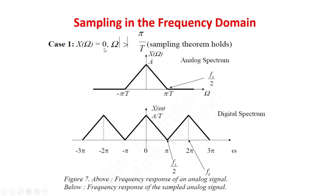This slide shows the sampling in the frequency domain. If you look at the spectrum of the analog signal, the analog frequency range from minus pi by T to pi by T in the analog domain corresponds to half the sampling frequency. If this is the analog spectrum and you sample the signal, you obtain the digital spectrum.